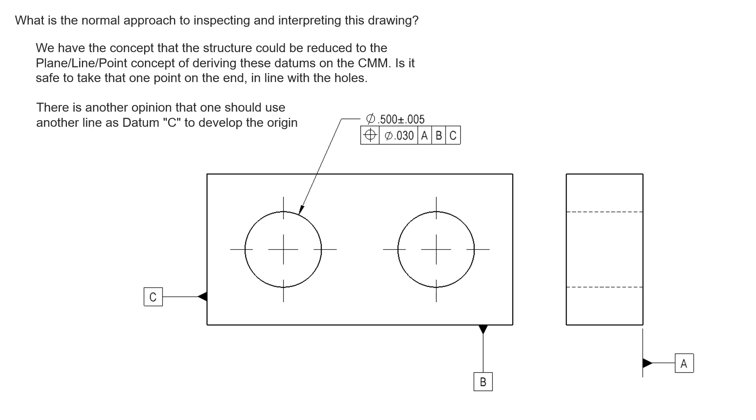There is another opinion that one should use another line as datum C to develop the origin. So what's the normal approach to inspecting and interpreting this drawing? I've removed the basic dimensions for clarity, but we see datum feature A identified as this back surface here.